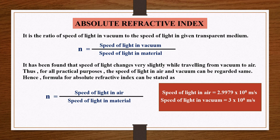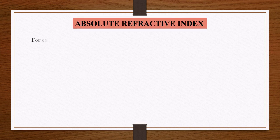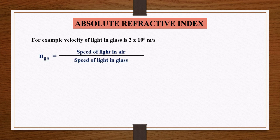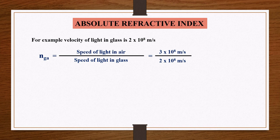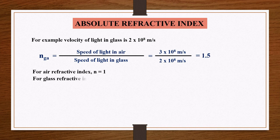For example, the velocity of light in glass is 2×10⁸ meters per second. So the refractive index of glass with respect to air is given by velocity of light in air divided by velocity of light in glass, that is 3×10⁸ m/s divided by 2×10⁸ m/s. Simplifying this, we get the refractive index of glass as 1.5.